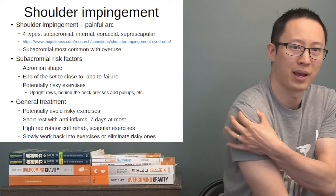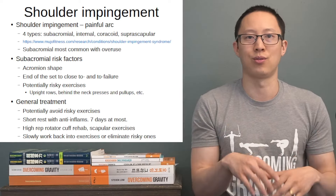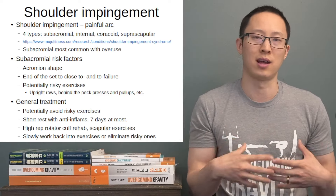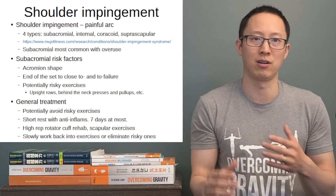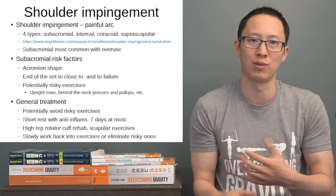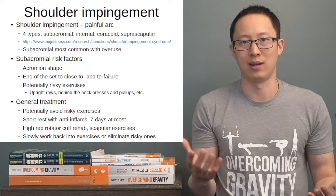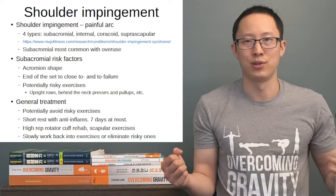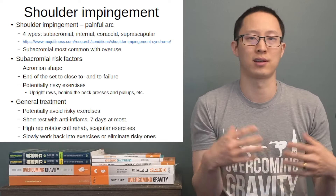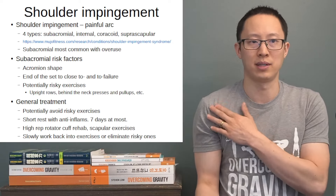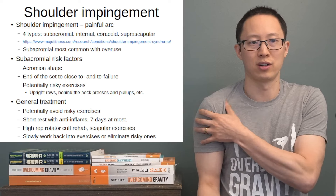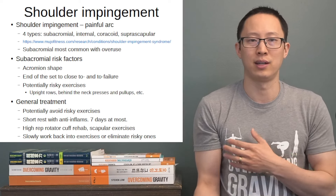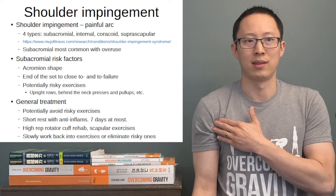Internal impingement is usually seen in overhead throwing athletes who have lost internal range of motion. If they've lost internal range of motion, their external rotators on the back of the shoulder are very tight, which slowly displaces the humeral head backwards in the joint. When that happens, the shoulder sliding back can impinge or rub on structures such as the labrum or irritate the posterior capsule, causing pain and dysfunction.